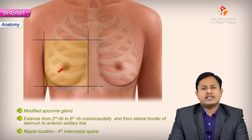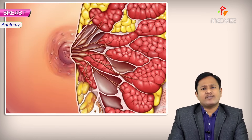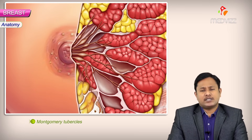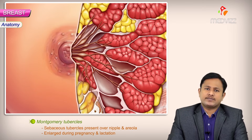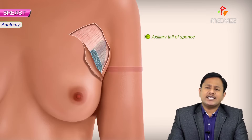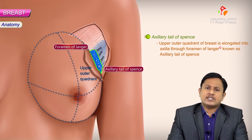All breast tissue has hair follicles, whereas there is no hair present over the nipple and areola in the female breast. We also have small glands called Montgomery tubercles — sebaceous tubercles present over the nipple and areola — which are enlarged during pregnancy and lactation. Additionally, there is an axillary tail of Spence, where the upper outer quadrant of the breast elongates into the axilla, passing through the foramen of Langer.